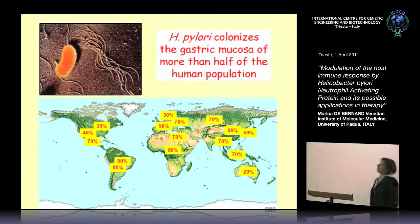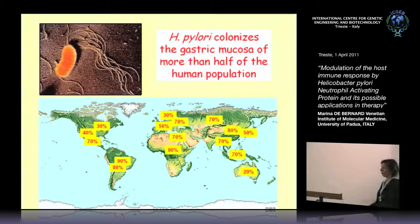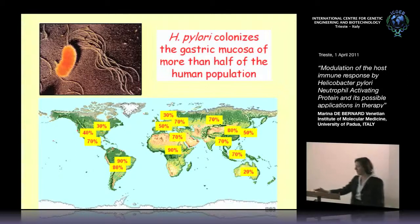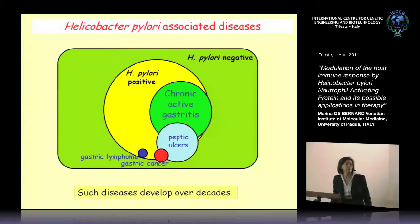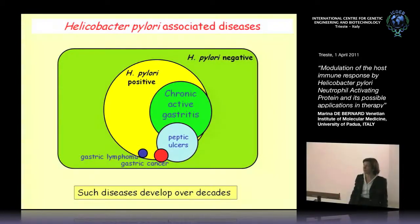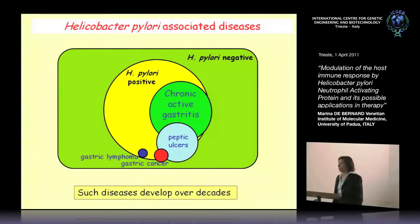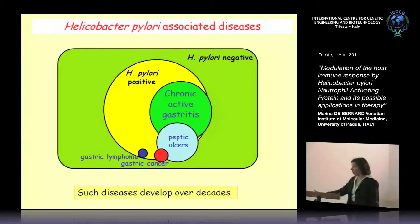Helicobacter pylori colonizes the gastric mucosa of more than half of the human population and it is responsible for the development of several gastroduodenal diseases, such as chronic active gastritis, peptic ulcer, gastric cancer and gastric lymphoma, and such diseases develop over decades.